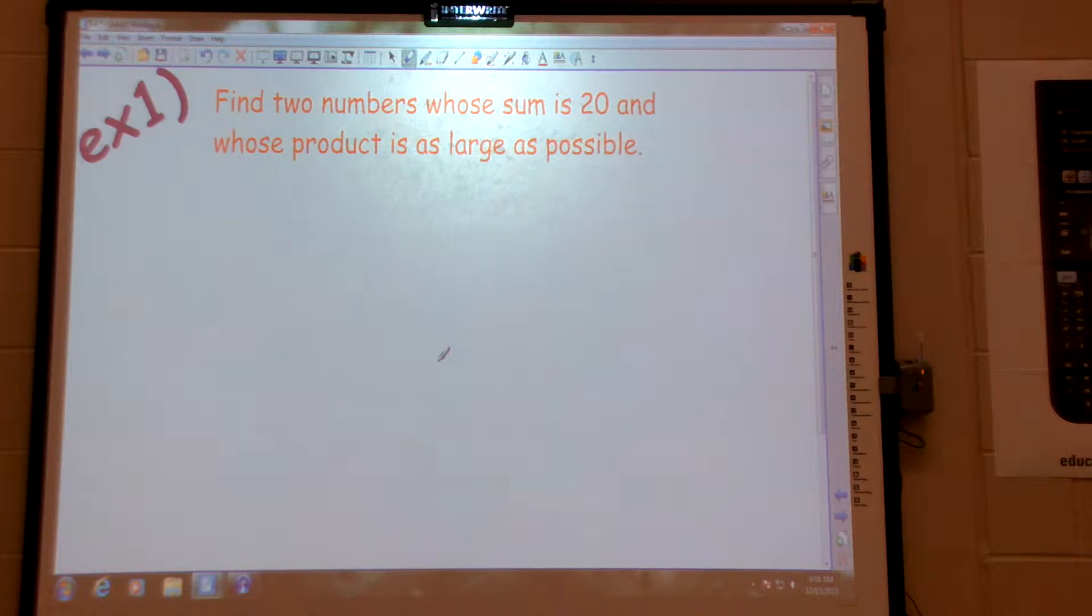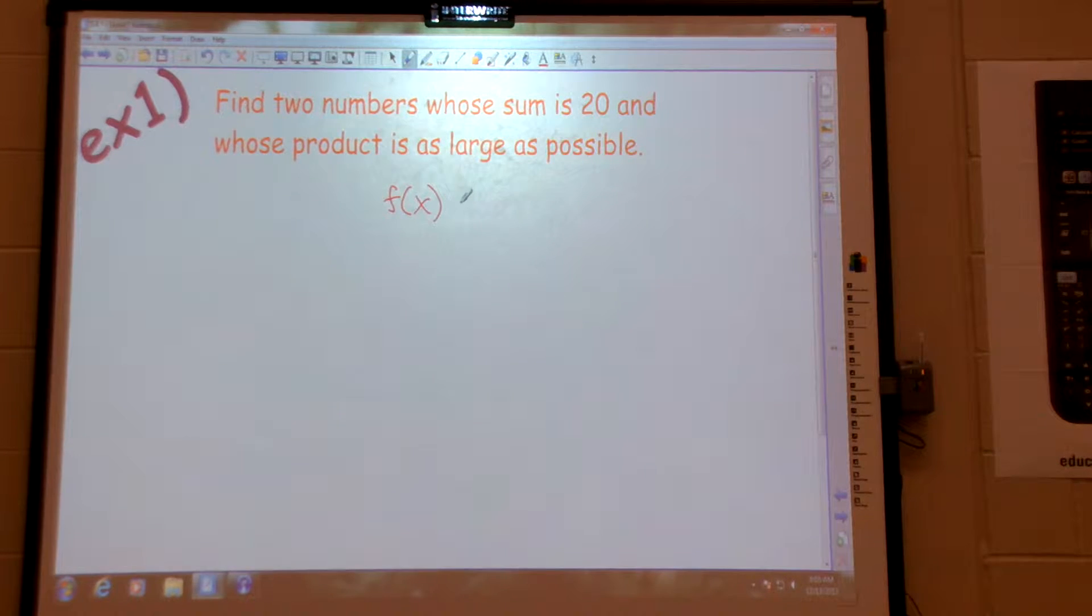Okay, find two numbers whose sum is 20 and whose product is as large as possible. I said it's a very easy one. Here's what I need to think of. My f of x. I don't need a picture in this case, it's not a real world situation. Your f of x is always what you are trying to maximize or minimize. What am I trying to maximize or minimize here?